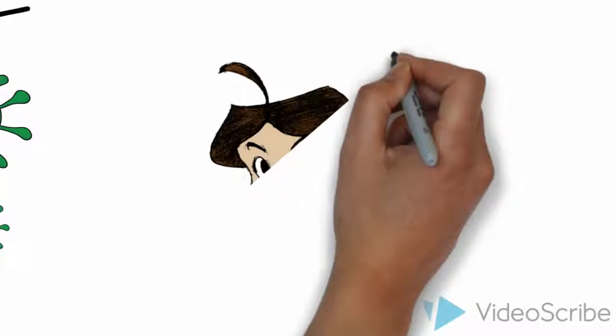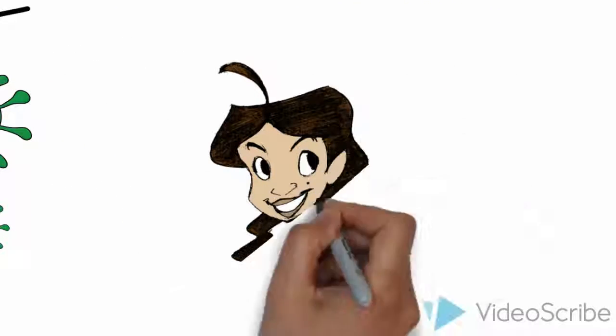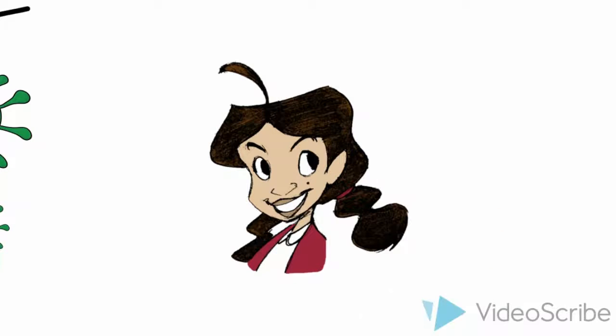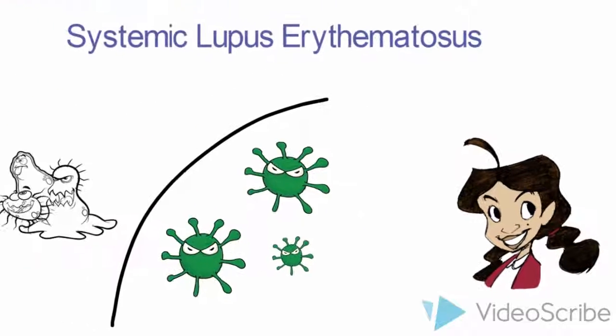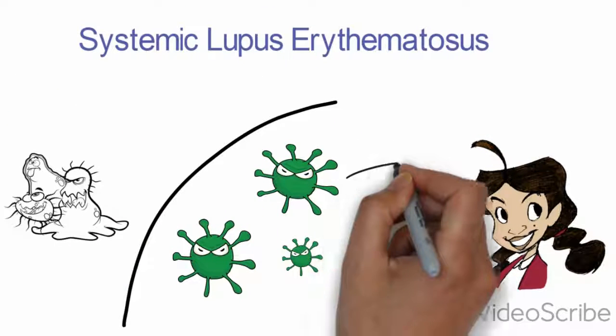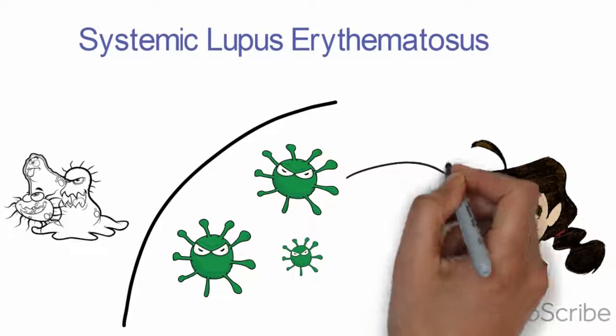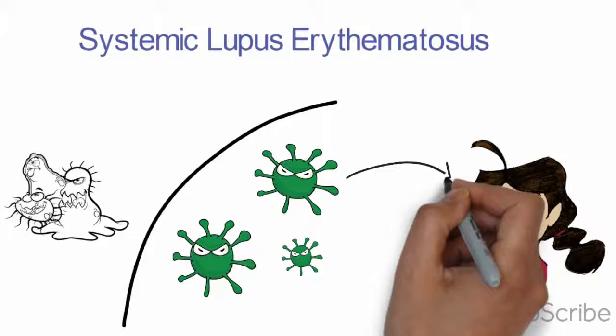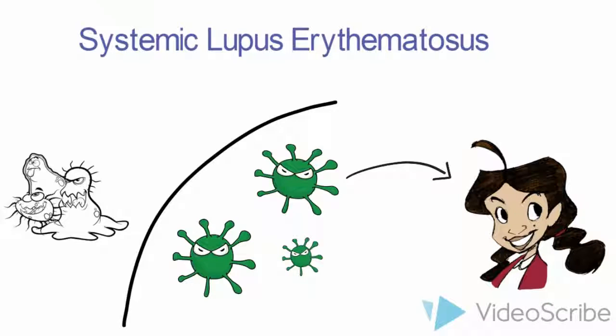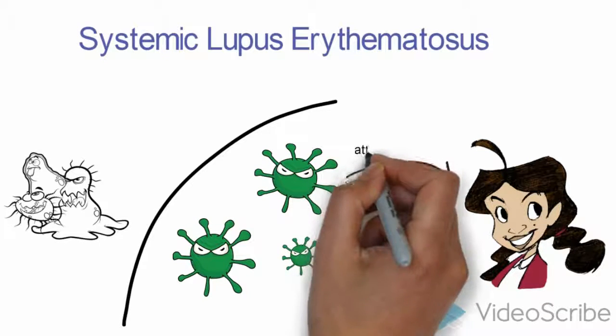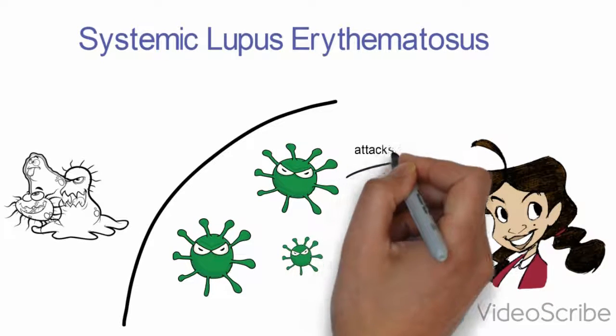So basically, instead of our immune system protecting us from invaders, they start to attack our own cells and our own tissues.